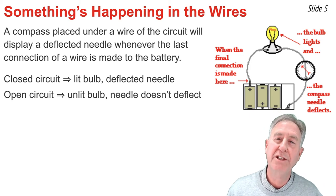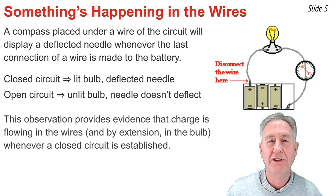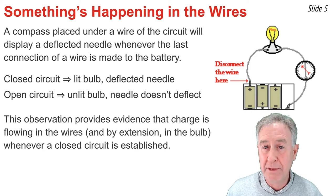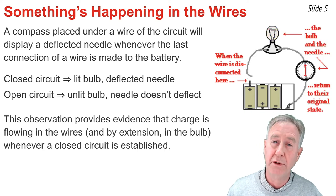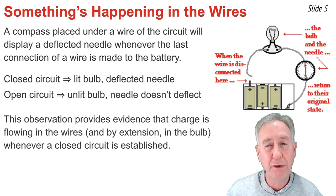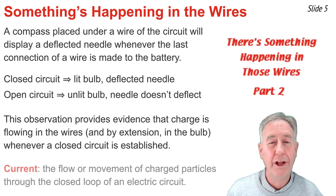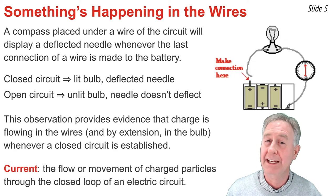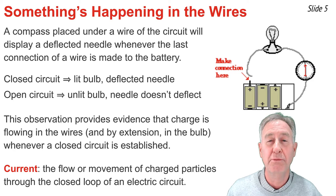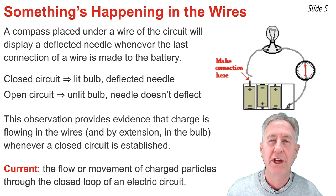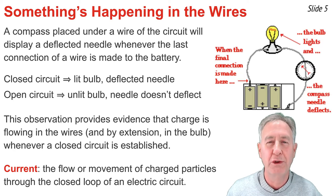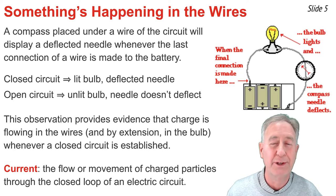This provides evidence for the claim that something is flowing through the wire, that something must be electrical, and we refer to it as charge. We have what we call a current. A current involves the movement of charged particles through the closed loop of an electric circuit.